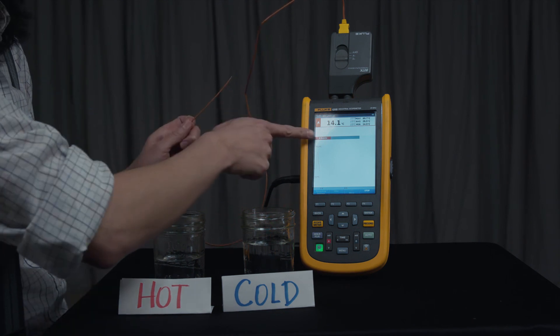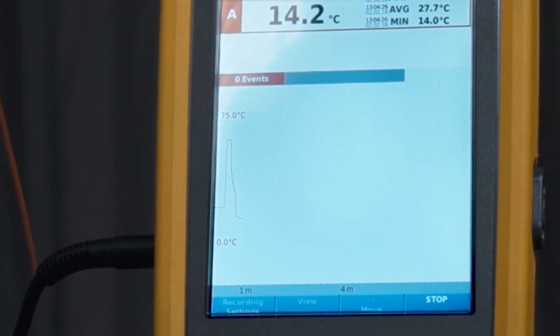And you can see here, there will always be zero events because we don't have a threshold. So there's no way to tell if there is an event or not.